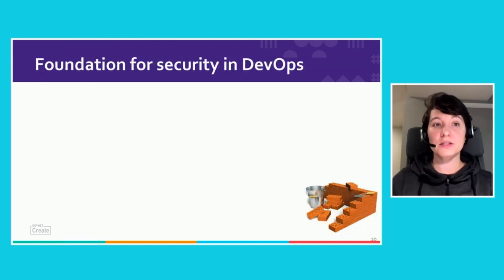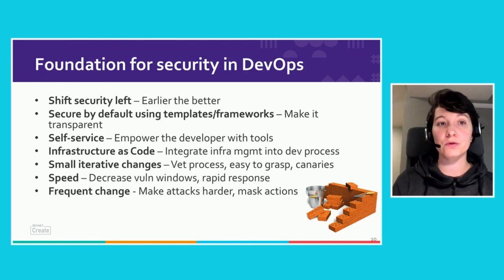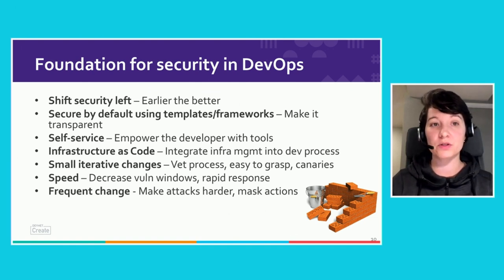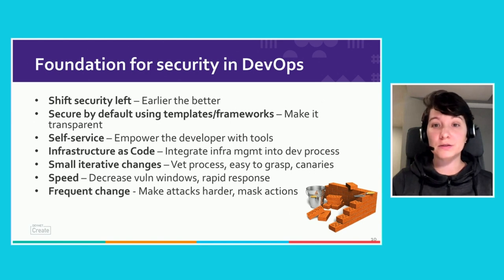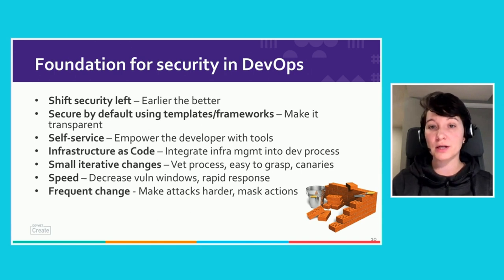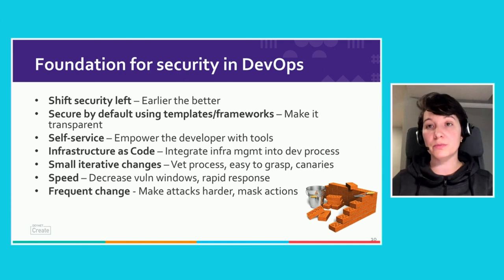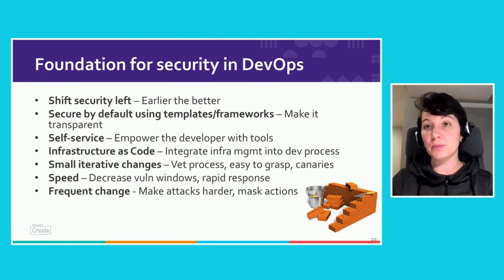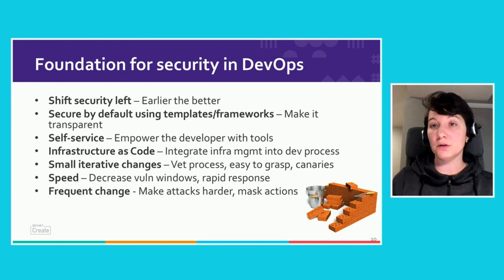There are a few things that can be done to address these challenges. First, security has to be embedded as early as possible and shift left in the development process. Vetted libraries and containers can be used to establish standards, and security tools need to be introduced for static and dynamic security analysis in the pipeline. Some new approaches can also be beneficial for security — frequent code changes are also challenging for attackers to keep up with, and immutable containers reduce the attack surface, making attacks more difficult to complete.